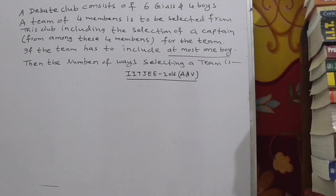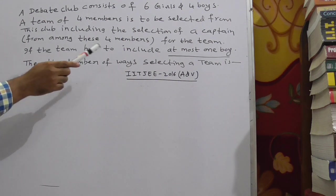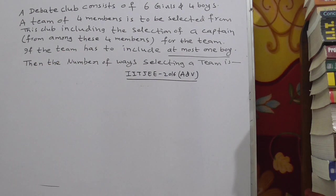A debate club consists of 6 girls and 4 boys. A team of 4 members is to be selected from this club, including the selection of a captain. What is the hidden condition here? Select a captain from among the 4 members. If the team has to include at most 1 boy, then the number of ways of selecting a team.